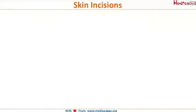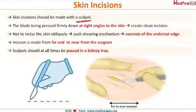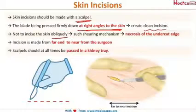There are some important points which we need to discuss before going into the detail of the different types of surgical blades. The first point is that the skin incision should be made with a scalpel, and the blade should always be placed at right angle or perpendicular to the skin. This will create a clean incision, as if the incision is made oblique, there will be necrosis of the undercut edges.